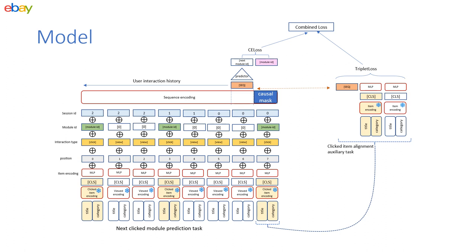We suggest a novel personalized module ordering solution based on the transformer model. Through a careful design, we exploit the capability of this model in capturing complex patterns in users' history interactions, from which we extract a representation that can be used to predict the next clicked module.